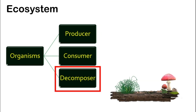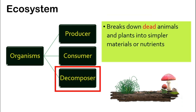Decomposers are the ones that break down dead animals and plants into simpler materials or nutrients. This interaction is actually called saprotrophism. A good example of a decomposer is the mushroom, and another example is bacteria.